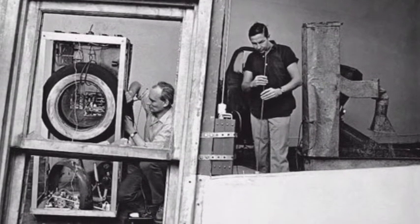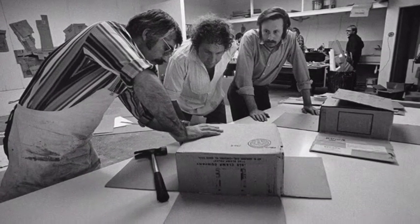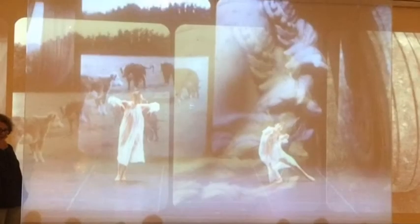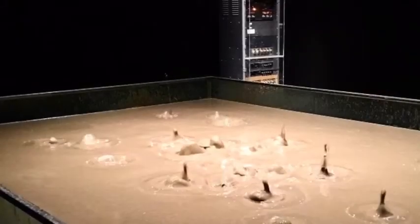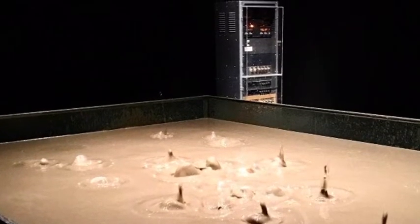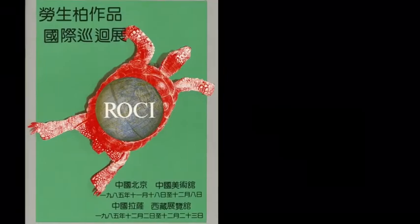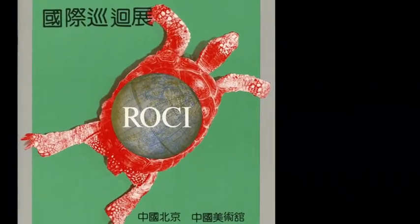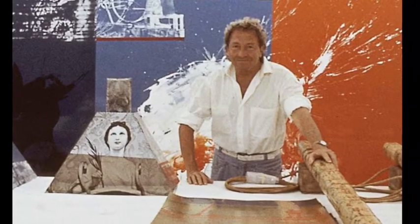He collaborated with various other artists of different expertise and combined anything he could think of that tested the boundaries of life, even bringing technology and art together in his Mud Muse (1968–1971) exposé. Rauschenberg spent generous amounts of his fortune in humanitarian activist movements in his ROCI expedition overseas. He named this project ROCI after his pet turtle. He wanted to spread peace through his art.